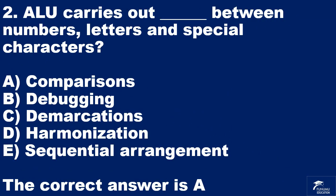Question 2. ALU carries out blank between numbers, letters and special characters. A: comparisons. B: debugging. C: demarcations. D: harmonization. E: sequential arrangement. The correct answer is A.